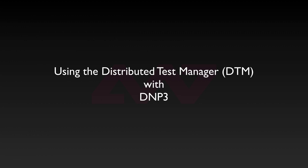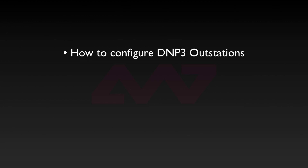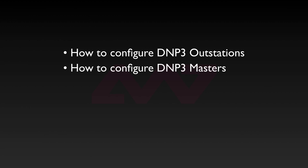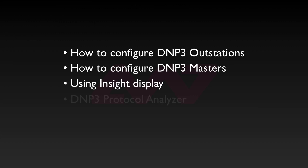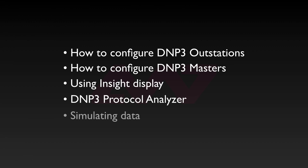In this series of videos, we'll look at using the Distributed Test Manager, or DTM, with DNP3. We'll show how to configure multiple outstation devices using comma-separated values or CSV files to create the point list, how to configure DNP3 masters to communicate with and retrieve data from multiple outstations, using a simple insight display to show data retrieved by the master, monitoring communications using a built-in protocol analyzer, and several ways to simulate data in DNP3 outstations.